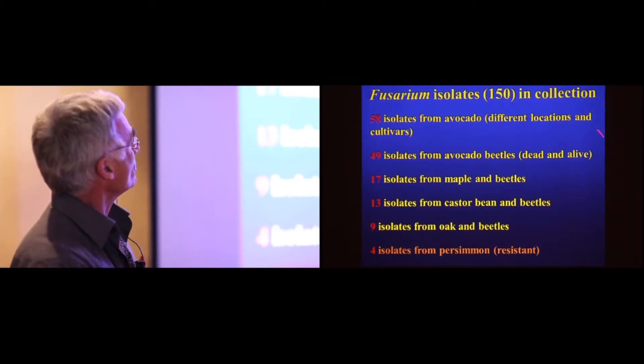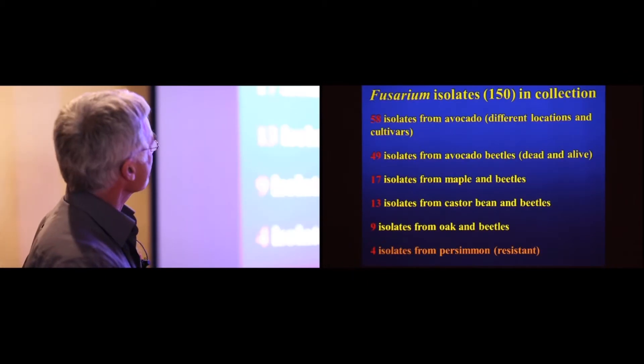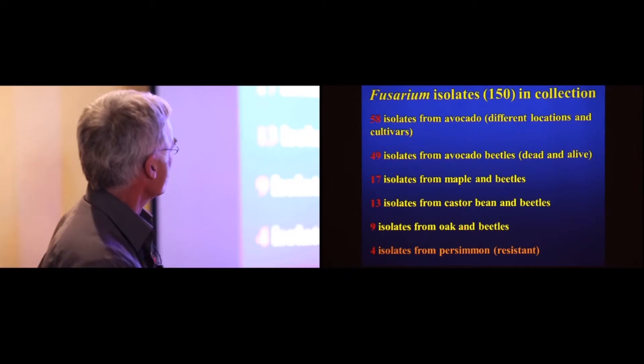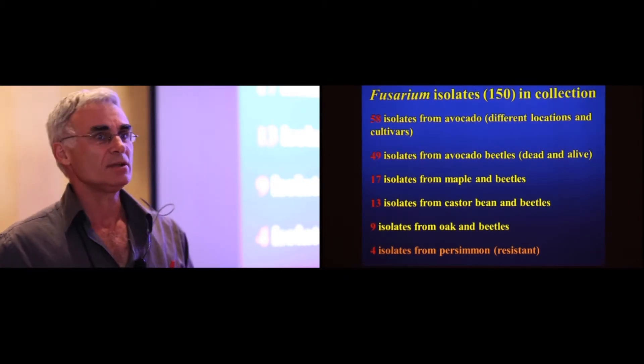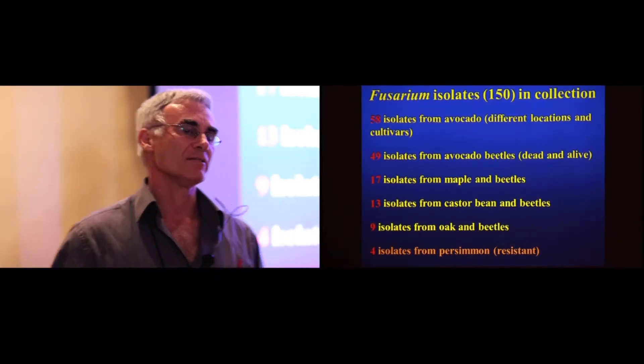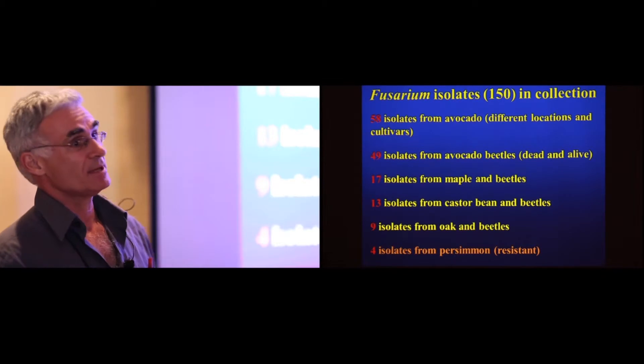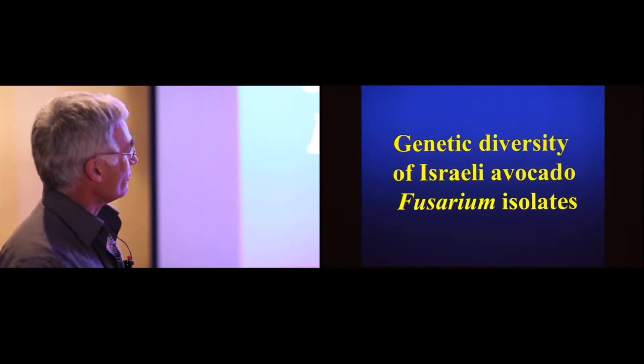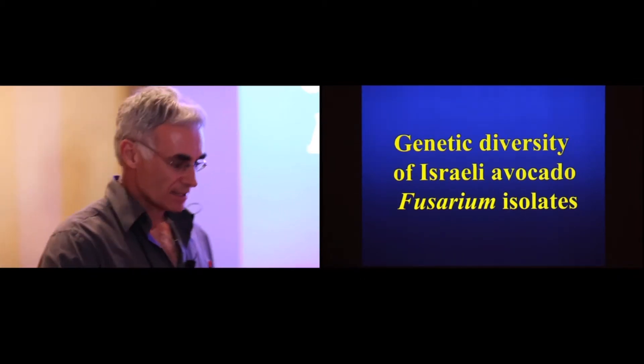So in our collection, at the moment, we have around 150 isolates or more. Isolates from avocado, avocado beetles, dead and alive, from Acer and agunda, from castor bean, from oak. We also have, interestingly, isolates from persimmon, which we consider non-host because the beetle will attack persimmon. However, the fungus cannot establish itself, therefore, the life cycle of the beetle cannot reproduce. We are able to isolate the fungus, but it cannot colonize under these conditions.